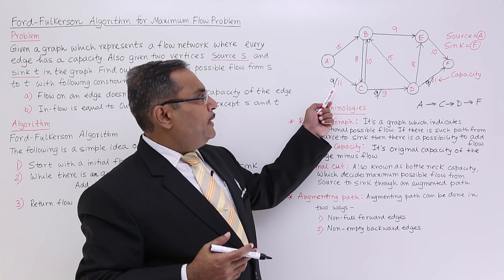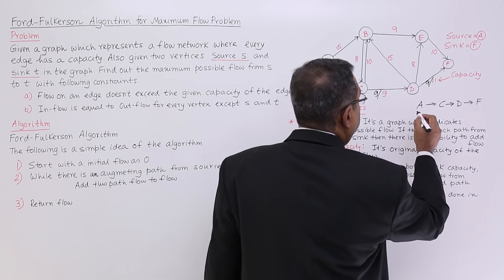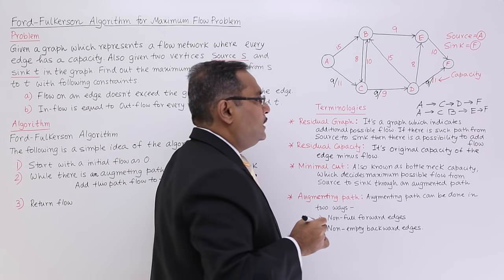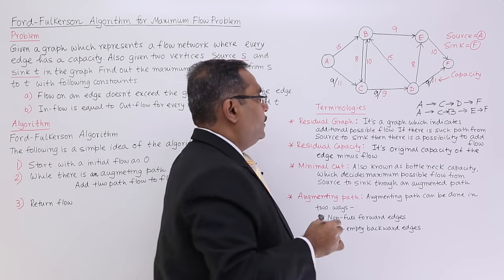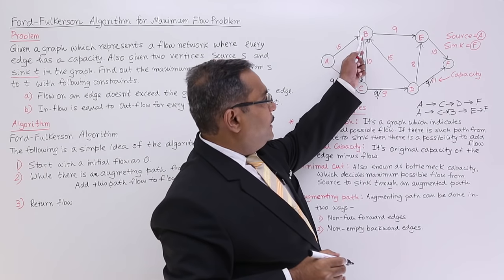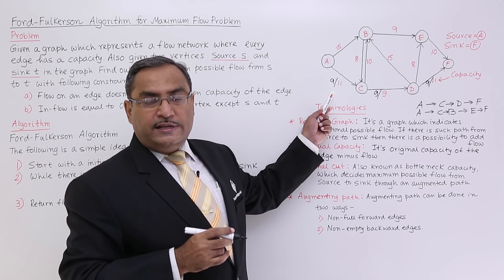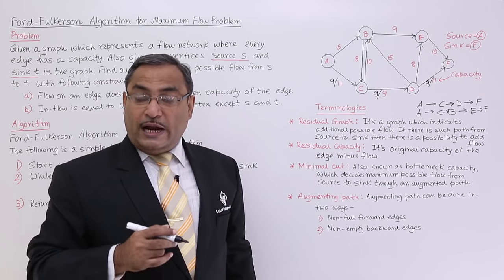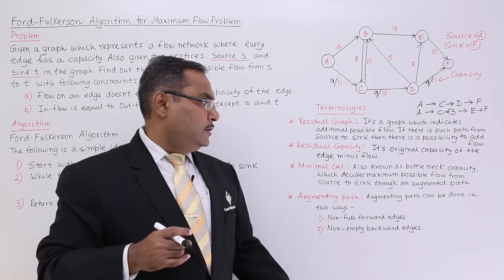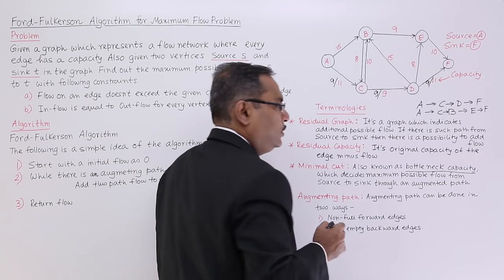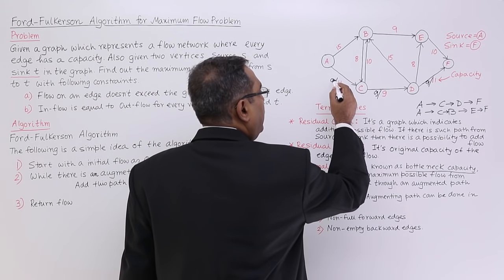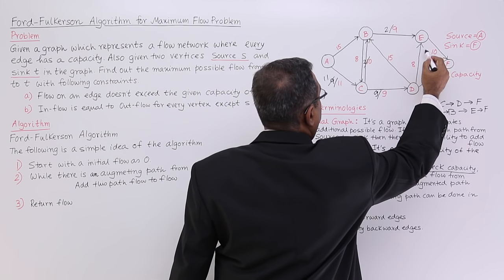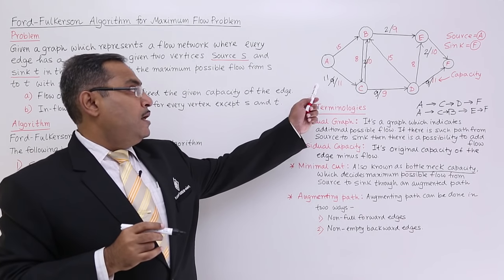As there is still some residual capacity, consider the path A → C → B → E → F. Here the residual capacity on A-C is 2, the capacity on C-B is 10, on B-E is 9, and on E-F is 2. The bottleneck capacity through this path is 2 — that is the minimal cut. So we can push an additional flow of 2 through this path.